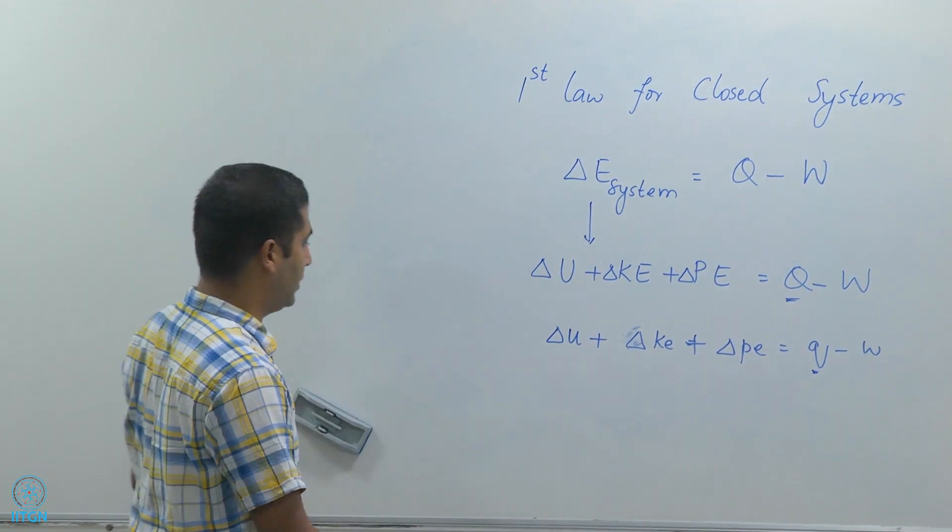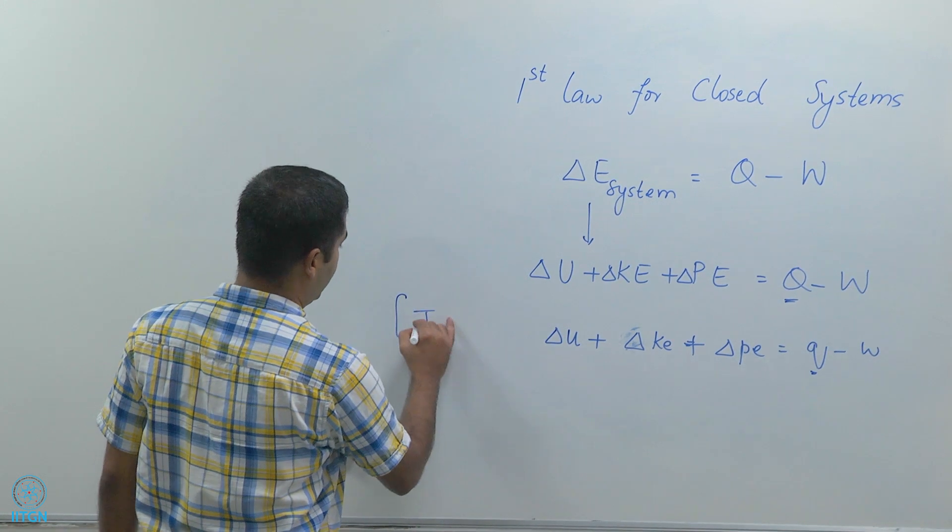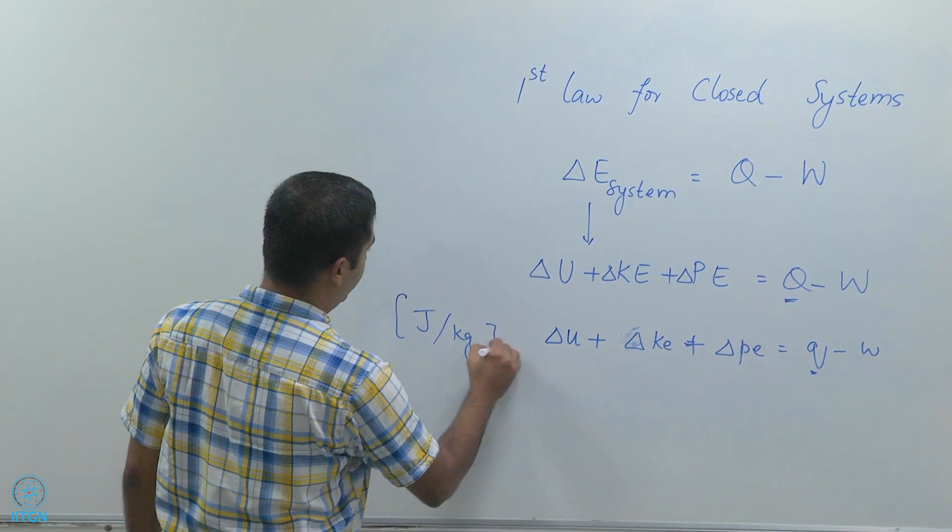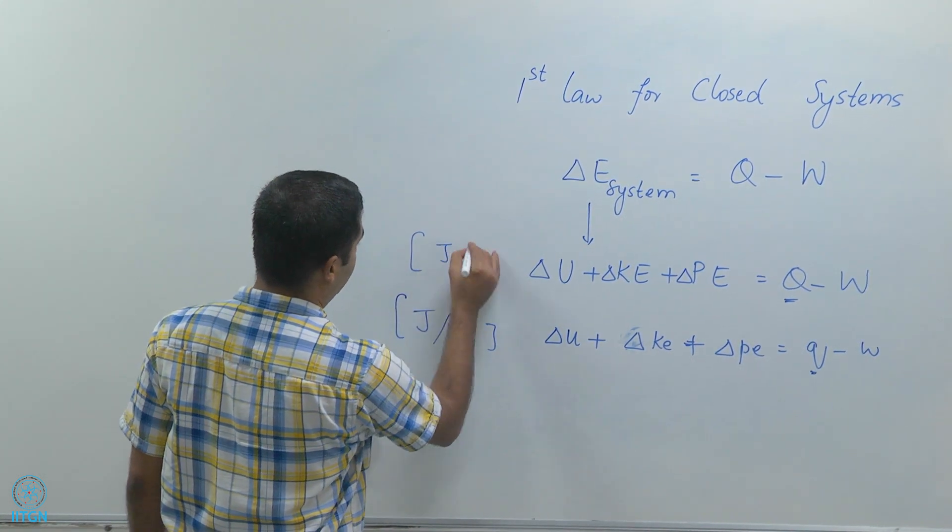If I write it on a per mass basis then each term in this equation will have units of joule per kg, whereas here each term has units of joule.